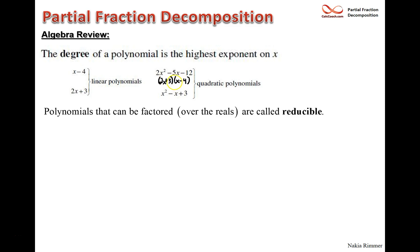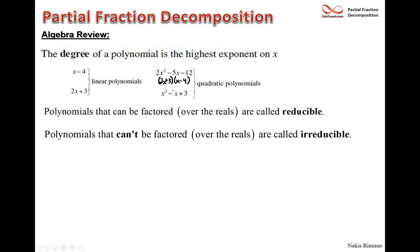There's a way to tell whether it factors just by looking at the coefficients of x², x, and the constant term. The second quadratic is not factorable — that's called being irreducible. We need to know whether a quadratic is reducible or irreducible.